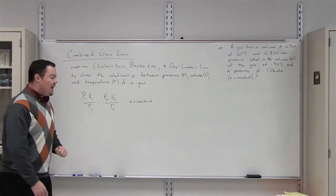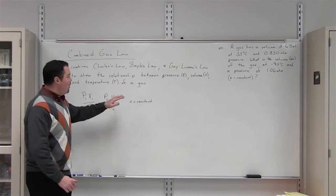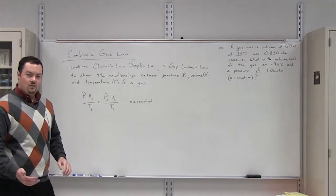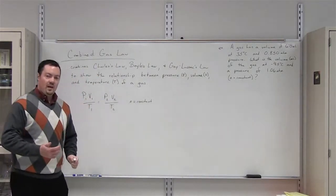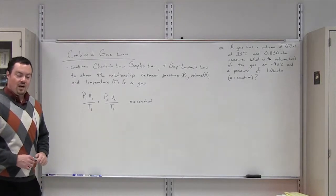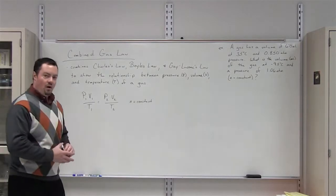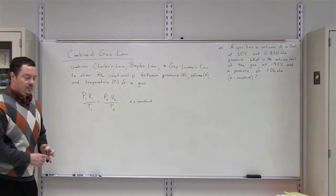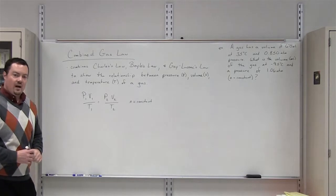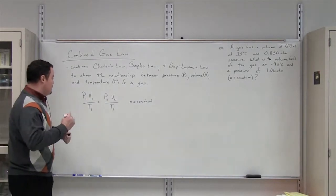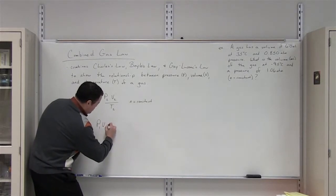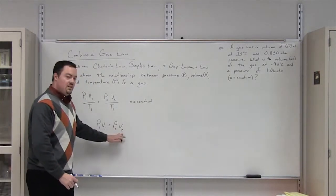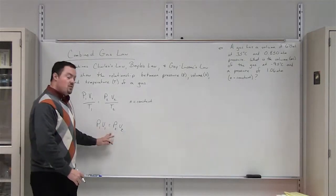We can also derive the other gas laws from the combined gas law by eliminating the variable that's held constant. For example, Boyle's law looks at the relationship between pressure and volume when we hold temperature constant. So if we get rid of the temperature values, the only thing left is P1 times V1 is equal to P2 times V2, which is the same equation used in Boyle's law.